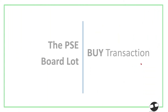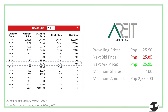Let's try to apply the board lot in a buy transaction. What if you wanted to buy Ariad and the prevailing price is ₱25.90? Looking at the board lot, the price range of ₱25.90 falls with a minimum price of ₱20 and a maximum price of ₱49.95. Therefore, you are required to buy at least 100 shares.